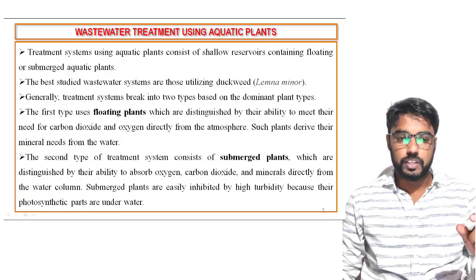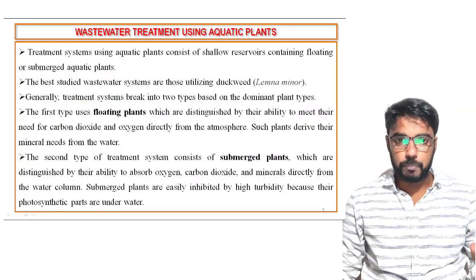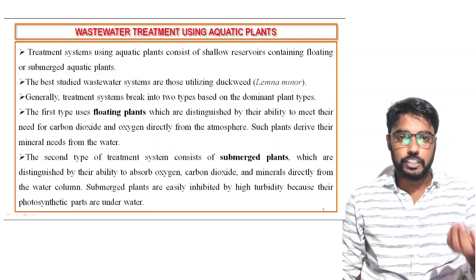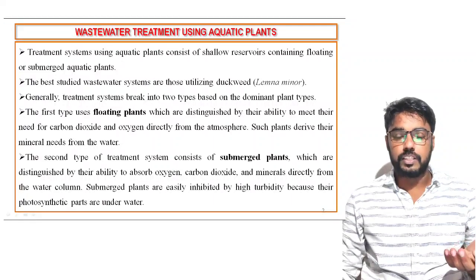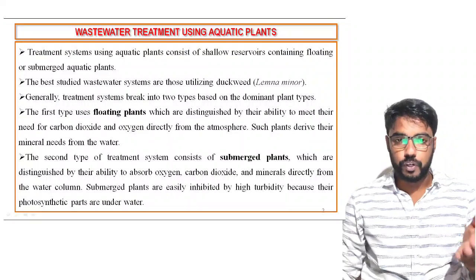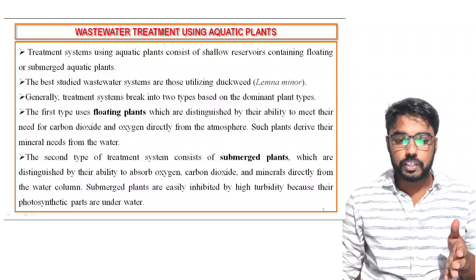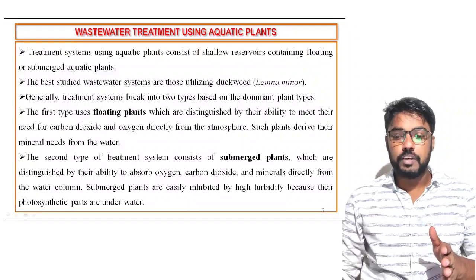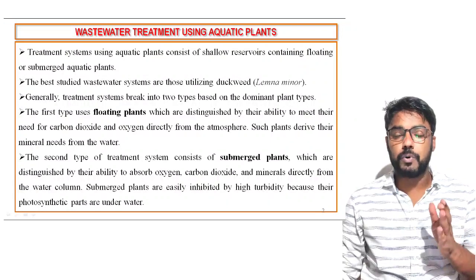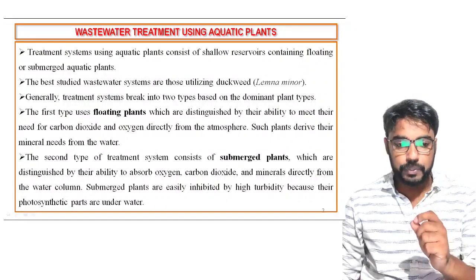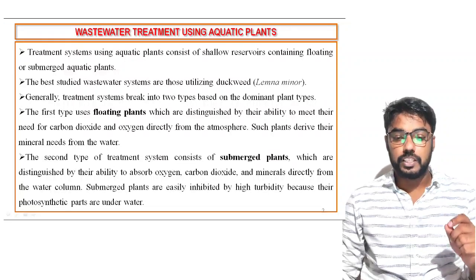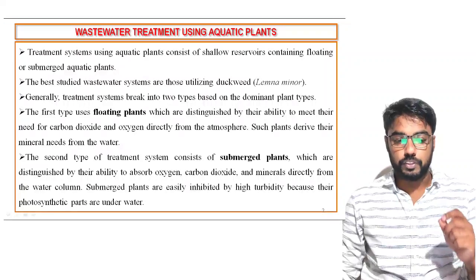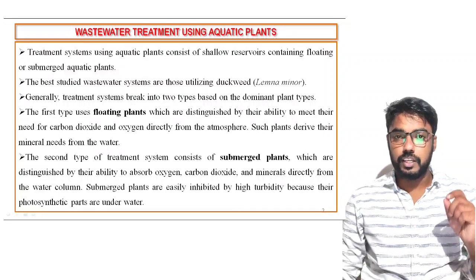Floating plants collect oxygen and carbon dioxide from the atmosphere, and collect minerals and other nutrients from the water. The second type of treatment system consists of submerged plants, which are distinguished by their ability to absorb oxygen, carbon dioxide, and minerals directly from the water column. These submerged plants are easily inhibited by turbidity because their photogenic parts are under the water.